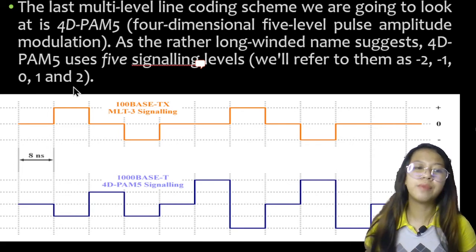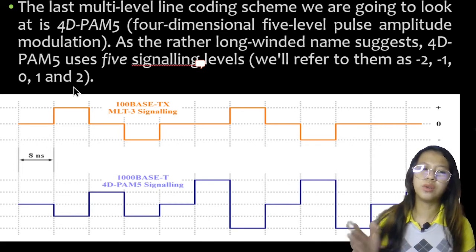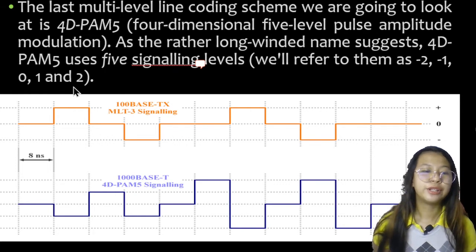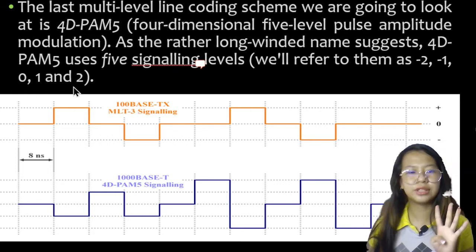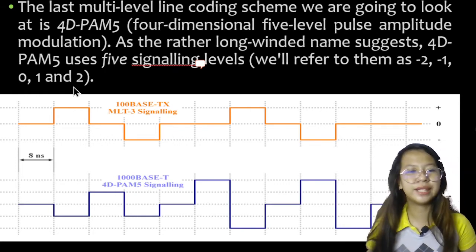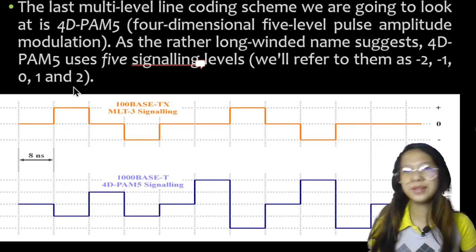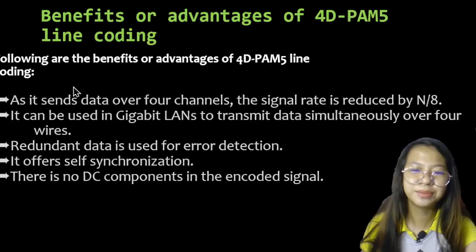If we assume the code is just one-dimensional, the four levels create something similar to 8B4Q line coding.